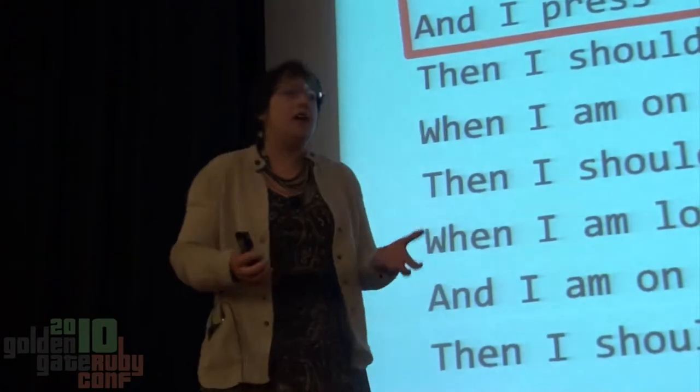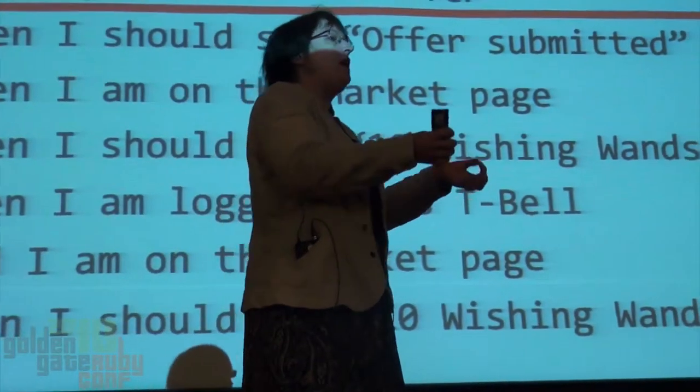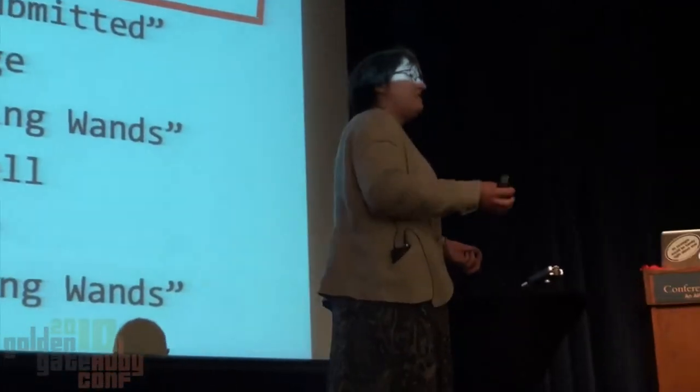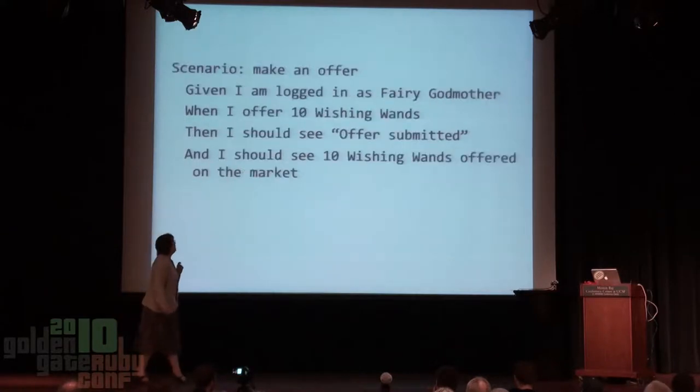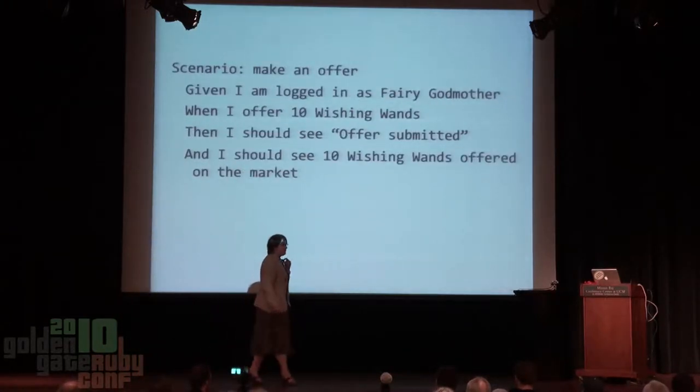So this is clearly violating the Strunk and White rule. Let's look at what's in there and pull out the essence. 'Given I am logged in as Fairy Godmother and on the make-offer page' — all of that surrounded in red is about making an offer, and all of the details in there are extraneous, almost gratuitous UI details. The only time UI details belong in our tests is when we're testing the UI. The customers want to express their intent — the intent here is to make an offer, and down here the intent is to see that the offer appears on the market.